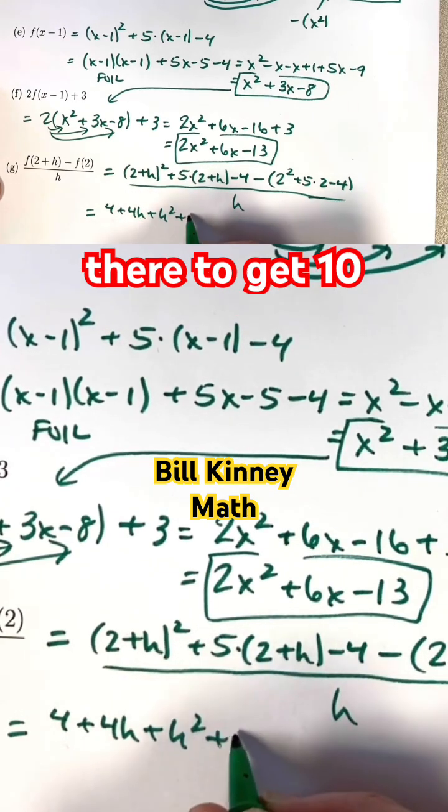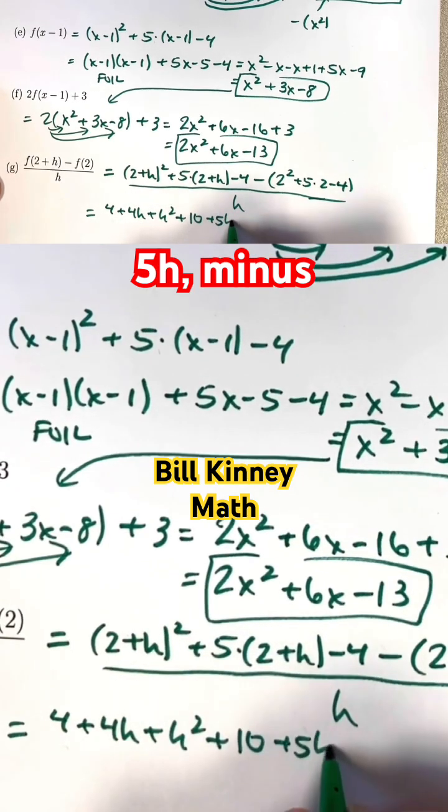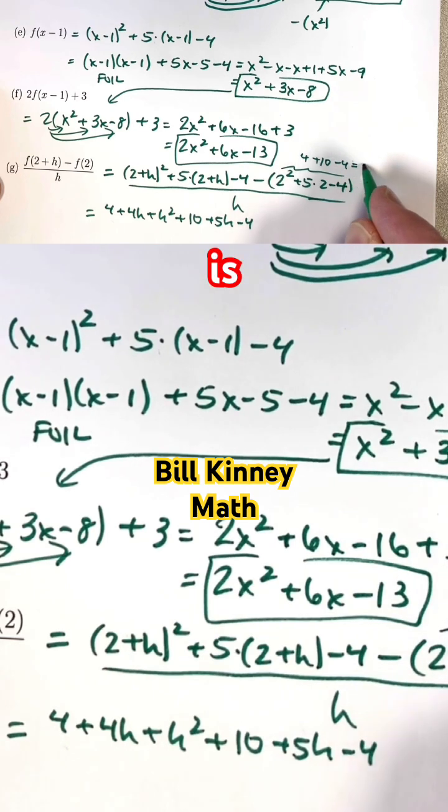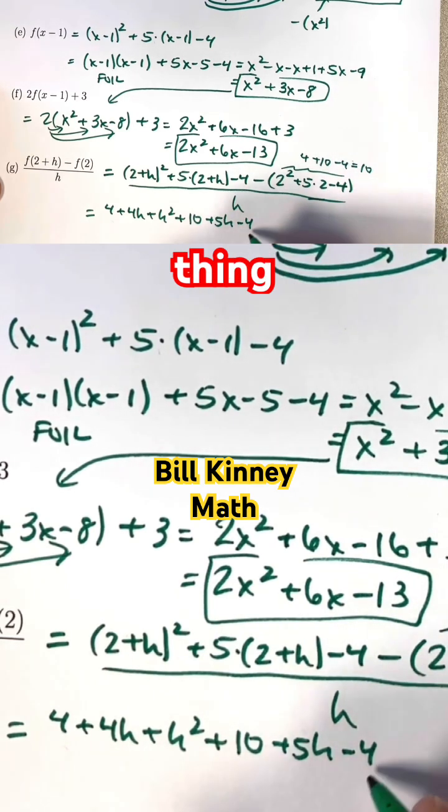Distribute the 5 through the parentheses there to get 10 plus 5h minus 4. Go ahead and simplify this expression. It's 4 plus 10 minus 4 is 10, and I'm subtracting that thing.